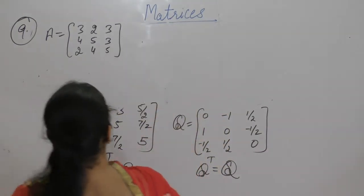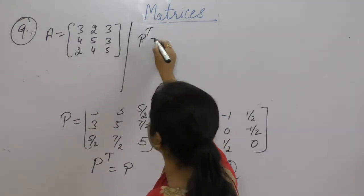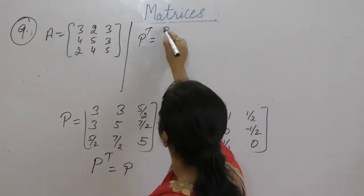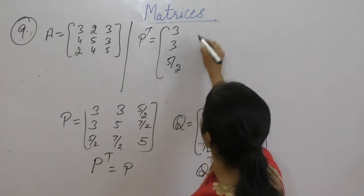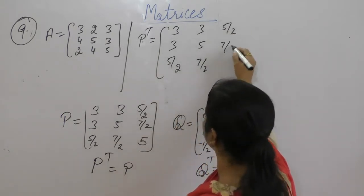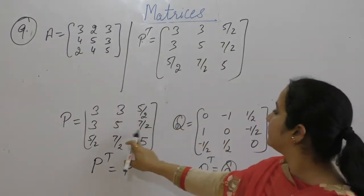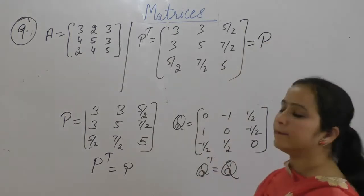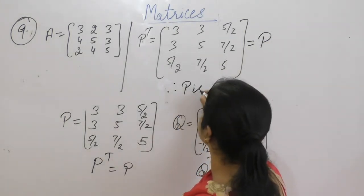Take P transpose. P transpose equals 3, 5/2, 5/2; 5/2, 5, 7/2; 5/2, 7/2, 5. That is equal to P. Therefore P is a symmetric matrix.